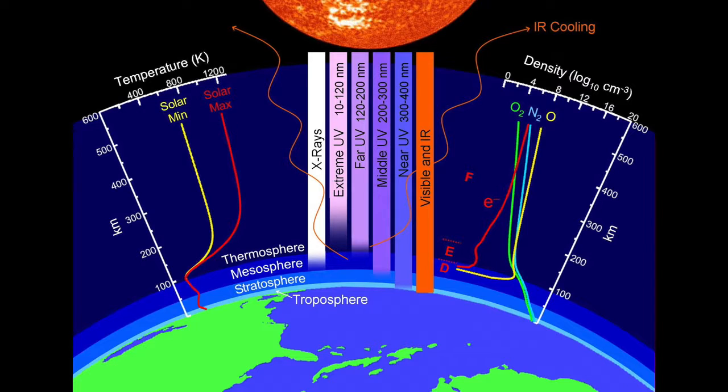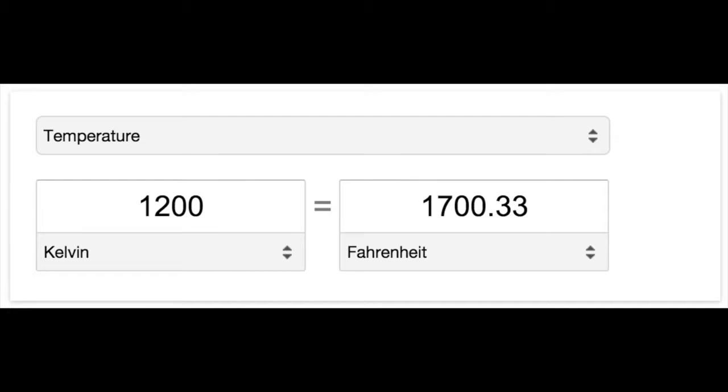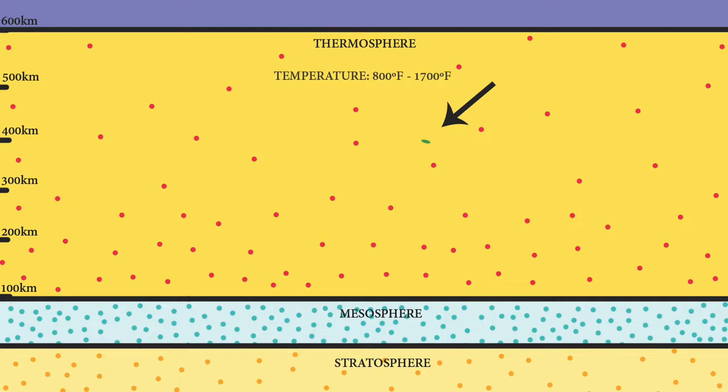And it says the solar minimum is 800 degrees Kelvin and the solar maximum is 1200 degrees Kelvin. So let's convert that, find out it's 980 degrees Fahrenheit to 1700 degrees Fahrenheit. That's pretty hot. The ISS has been orbiting in there for 16 years now.